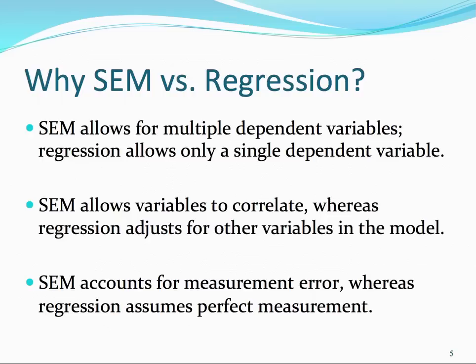One question you may ask yourself is why do we use structural equation modeling versus just using simple or multiple regression? There are three main advantages of SEM over regression. First, SEM allows for multiple dependent variables, whereas in regression we are restricted to predicting only a single dependent variable. Second, SEM allows variables to correlate with one another, whereas in regression we must adjust for other variables in the model. Perhaps most importantly, SEM accounts for measurement errors, whereas regression assumes that our measures are perfect.